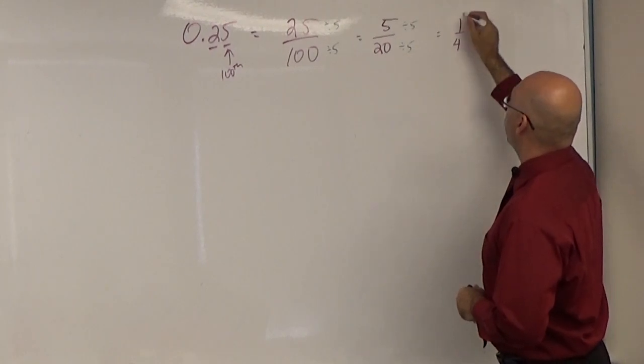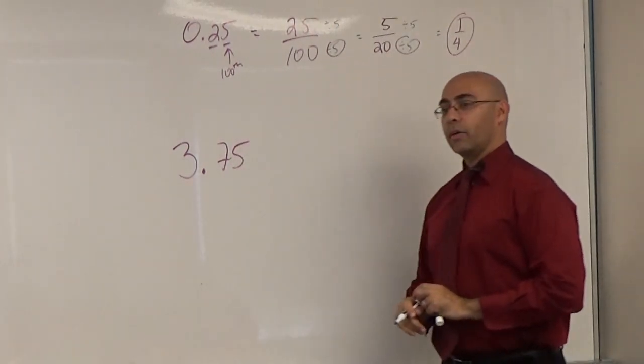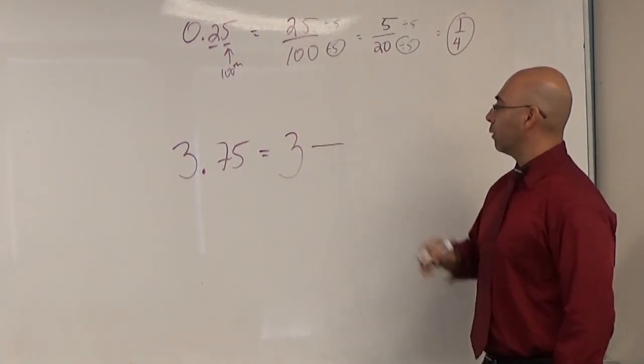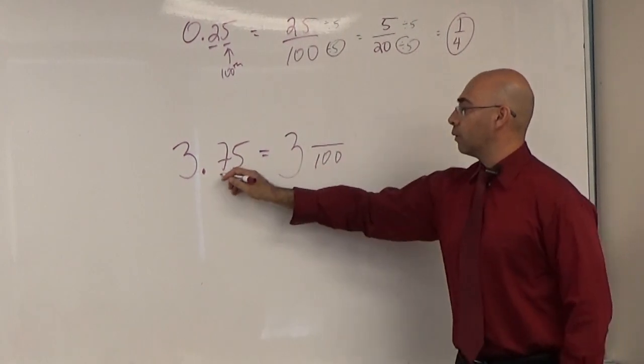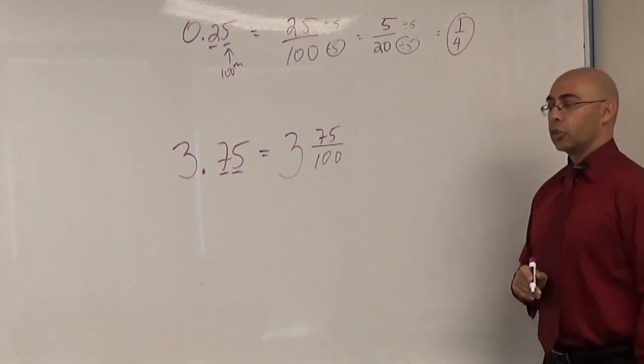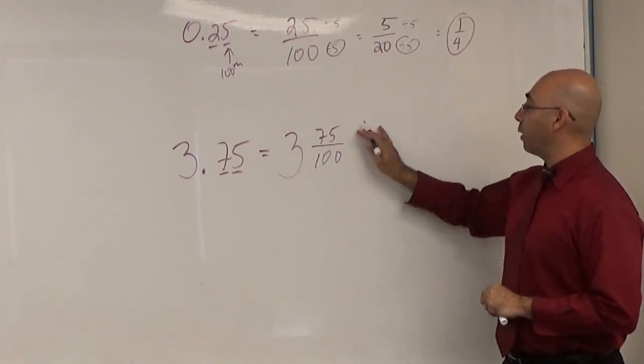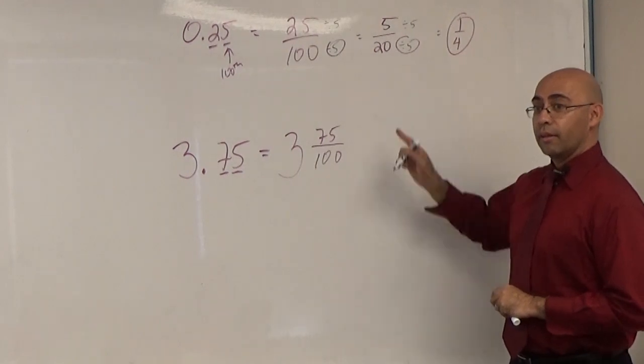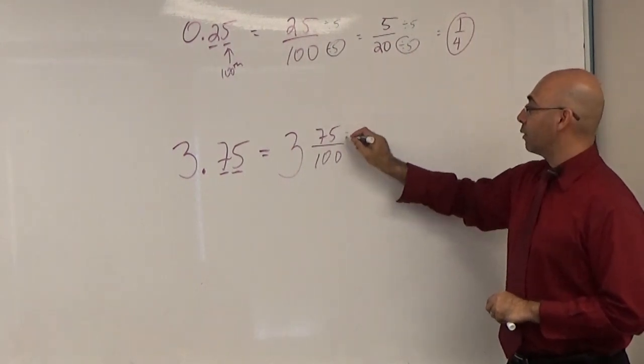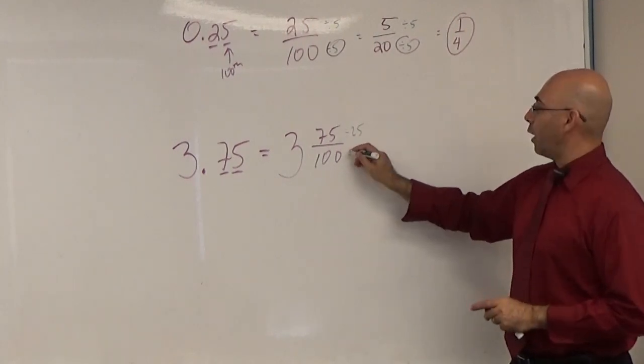Let's do 3.75. How do I do this one? It's gonna be a whole number. Good. Is that my final answer? Why not? Could I divide by anything else besides 5? Think money.